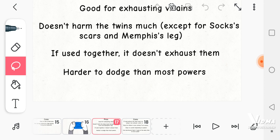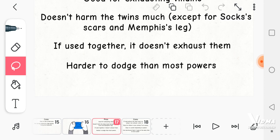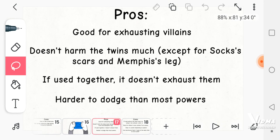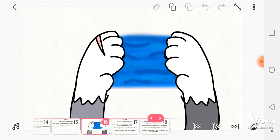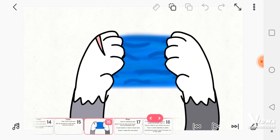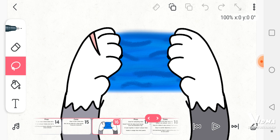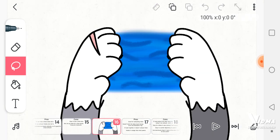And three, if used together, it does not exhaust them at all. And four, it's harder to dodge than most powers, which means they can use it without often risking the villains dodging.